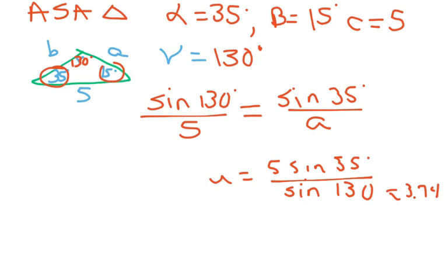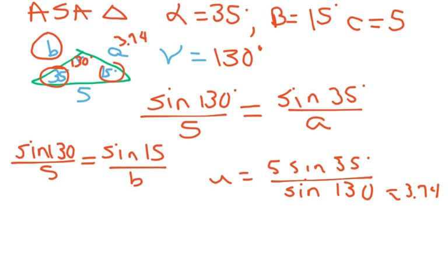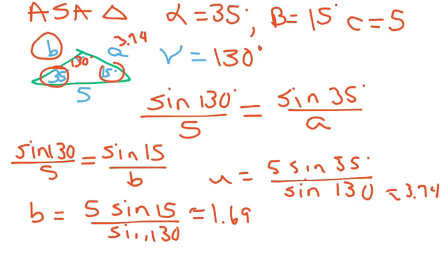And that's going to give you approximately 3.74. So that's going to be our A, 3.74. And just by looking, you should know that B is going to be pretty small because it has the smallest angle. And we're going to do the same thing there. Sine of 130 over 5 equals sine of 15 over B, cross multiply, and you will get 1.69, approximately. That's how you do the approximate.